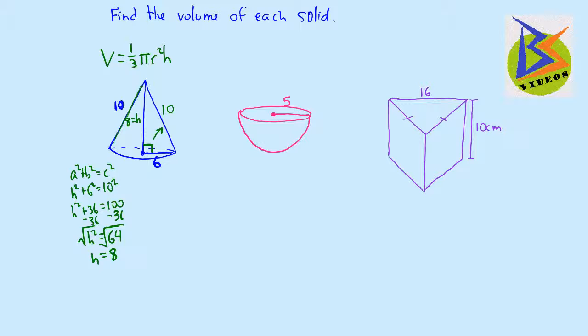So now that we have that, what we can do is we can use our equation here and plug in what we know. So we see that the volume is 1/3 times 3.14 times our radius of 6 squared times the height, which is 8, which is what we just found.